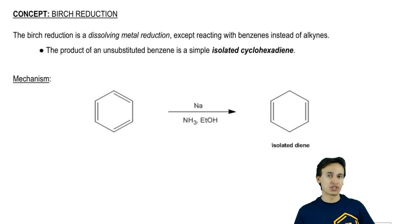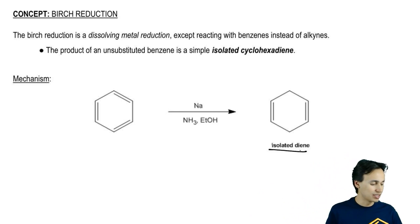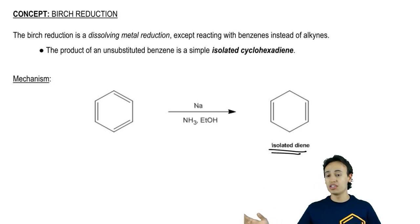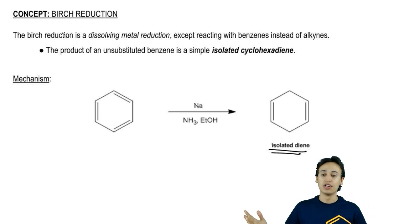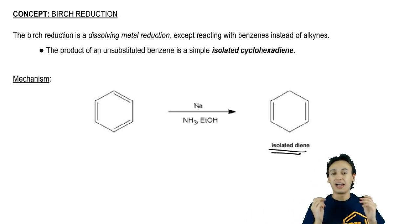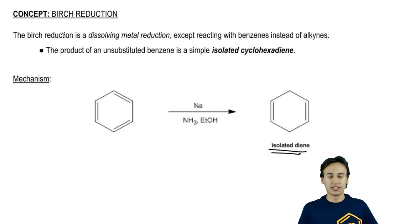Let's just take a look at the general reaction for a second. What a Birch reduction does is it combines elemental sodium with an amine and alcohol to turn a benzene into what we call an isolated diene. Specifically, if this were to happen with an unsubstituted benzene like we have here, our product would be an isolated cyclohexadiene, two double bonds that are far apart from each other in a 1,4 position on a cyclohexane.